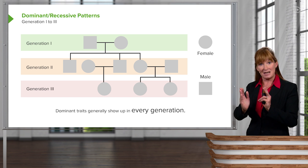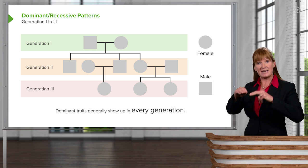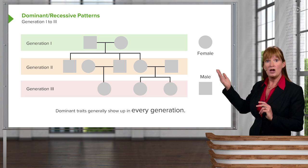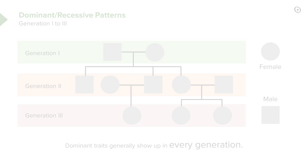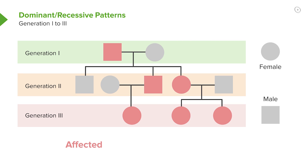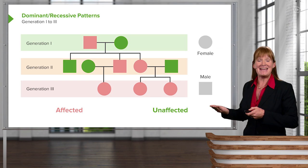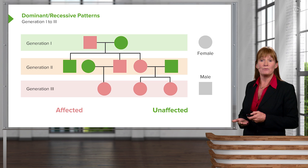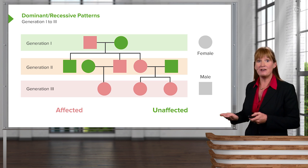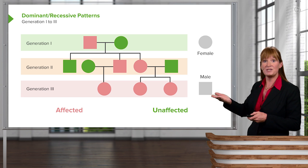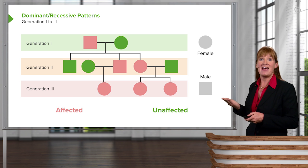The lines between them indicate reproduction. In the next generation down, we can see a certain number of pairings and offspring. In the case of the dominant allele, you have an affected individual — anyone that has one of those dominant alleles is affected. So if the father is affected, then some of the offspring at least will also be affected. If they do not get one of the alleles, we consider them unaffected. Generally, in a pedigree of a dominant trait, you will see the trait show up in every generation.